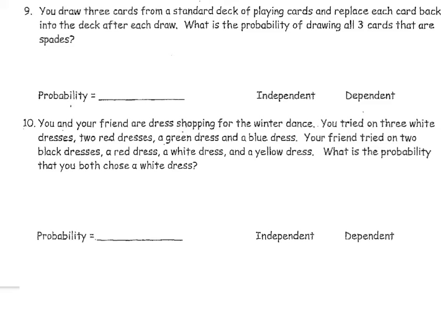Let's look at the next example. You draw 3 cards from a standard deck of playing cards and replace each card back into the deck after each draw. What is the probability of drawing all 3 cards as spades? Since you're replacing each card after the draw, this is an example of independent events. If you did not replace them, it would be dependent.